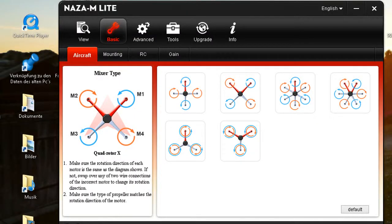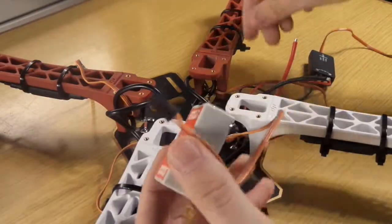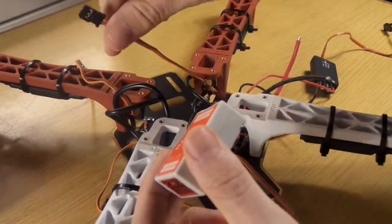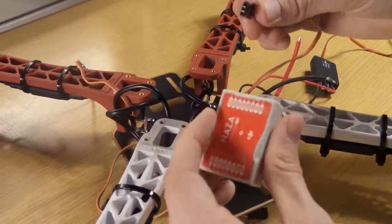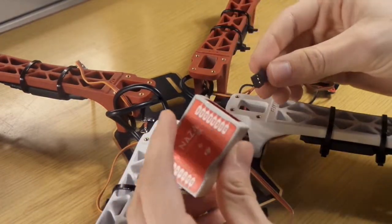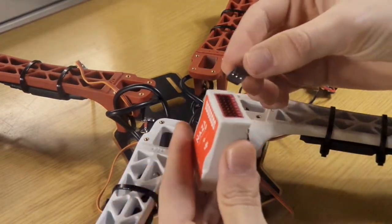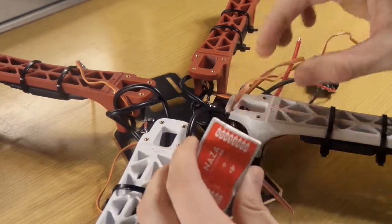Be careful you have to put in the motors like on this image: M1, M2, M3 and M4. We take the cables from the motors and put it into the NASA M flight controller into M1, M2, M3 and M4.